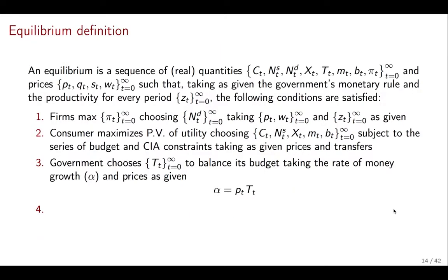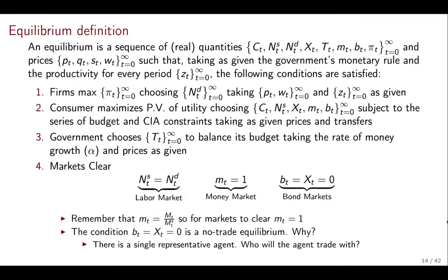Then the government is going to choose the transfers to balance the budget, taking as given the growth rate of money or equally the monetary rule. And we've seen this. There is a typo here because it requires a minus. So I apologize for that. There is a typo and this should be minus PT. Okay. Then, oh, sorry. Then finally, markets have to clear. And we have three markets to clear. We have the labor market, we have the money market. Clearing the money market.